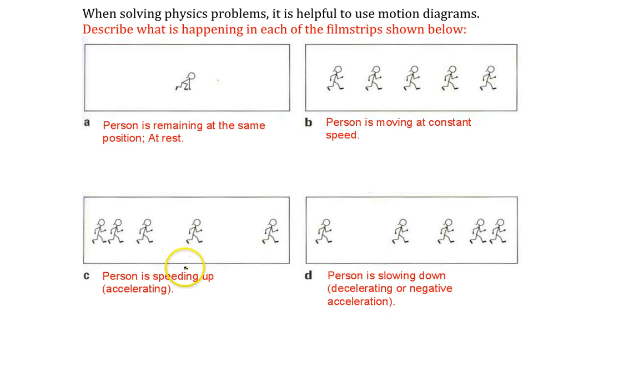We'll be drawing these diagrams and we'll also be annotating them. For example, if you look at picture A, the person's remaining at rest. So the speed is 0 meters per second.